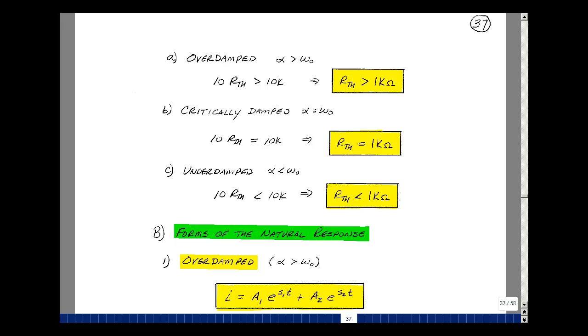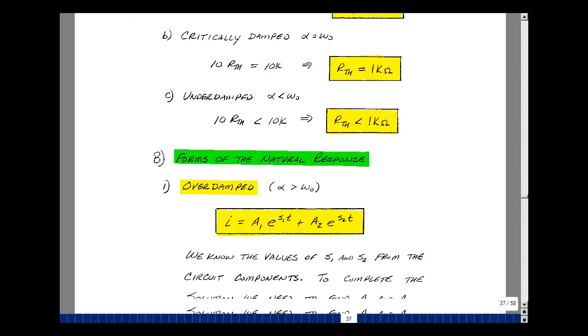This lesson deals with the overdamped natural response of a series RLC circuit. You can find these notes in the ECE 201 e-book in Chapter 7, starting on page 37. In our last video, we talked about the three forms of natural response of a series RLC circuit. We're going to look at the overdamped case, where alpha is greater than omega-naught, where alpha and omega-naught were defined on page 35.